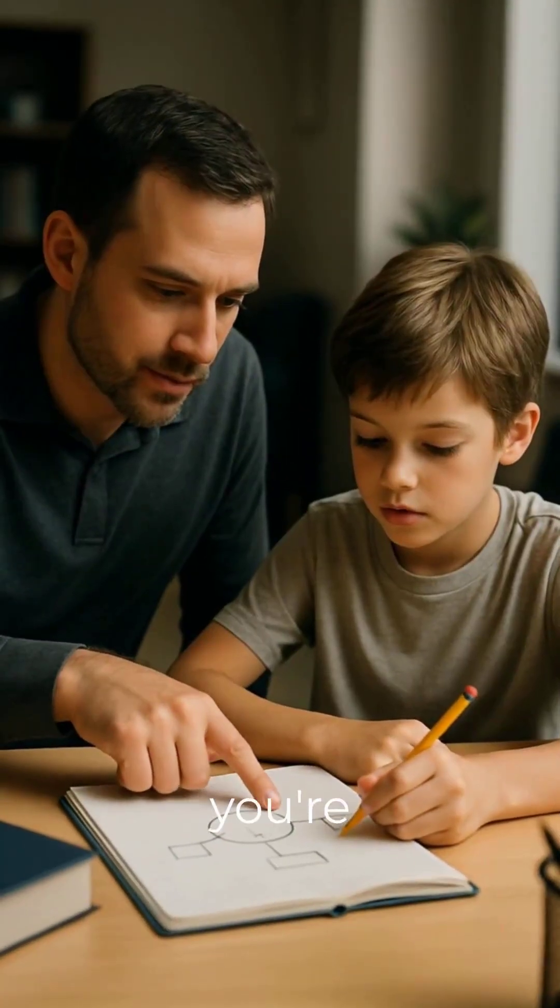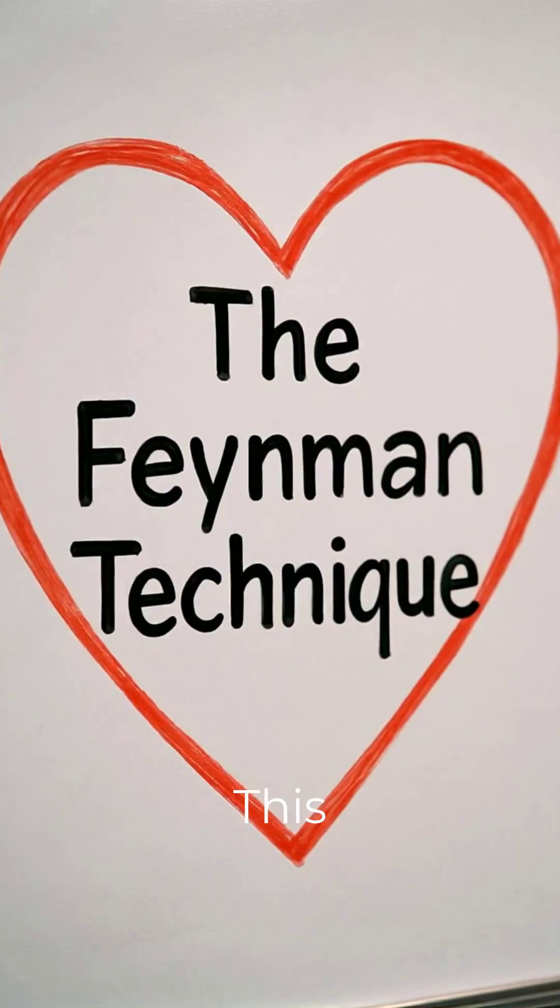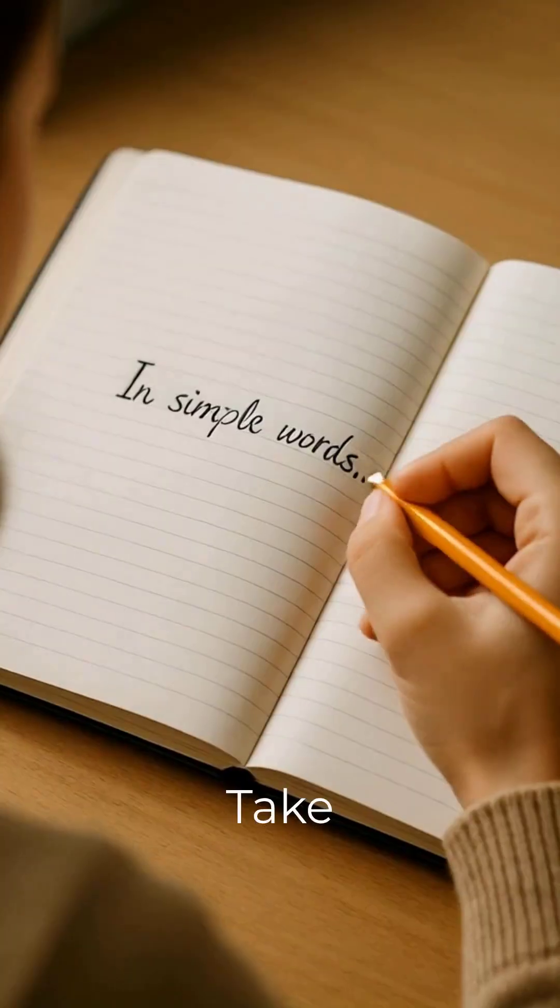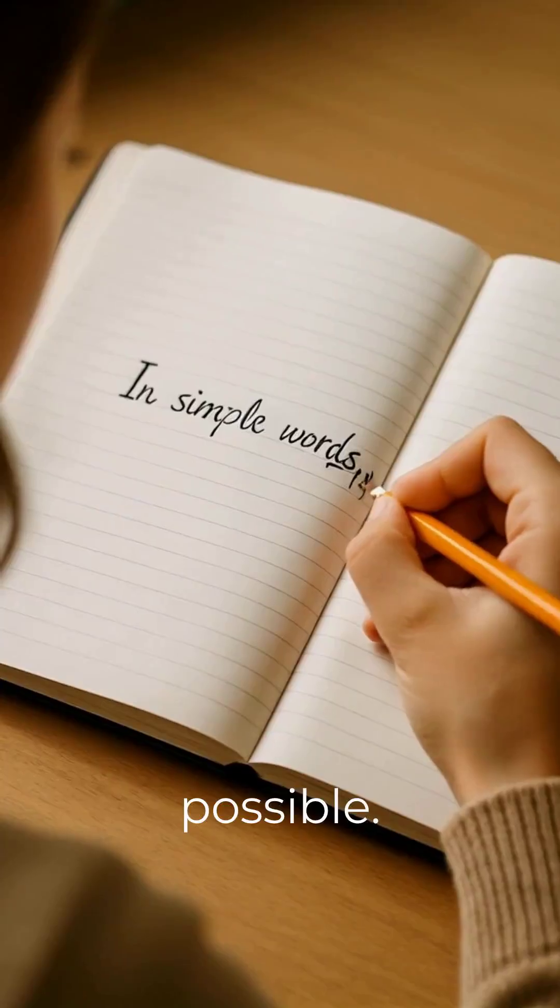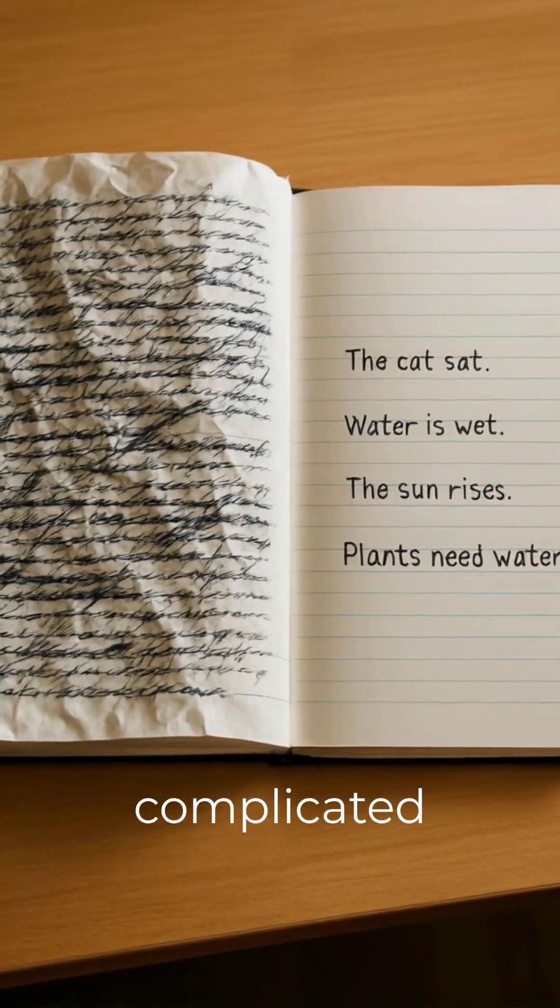Step 2. Explain it like you're teaching a 10-year-old. This is the heart of the technique. Take the topic and try to explain it in the simplest words possible. No big jargon. No complicated terms. Just clear, everyday language.